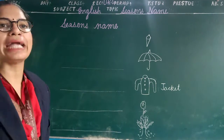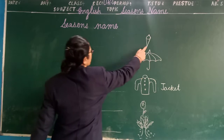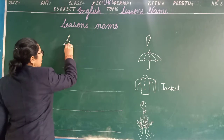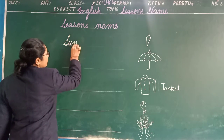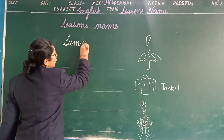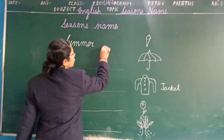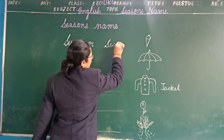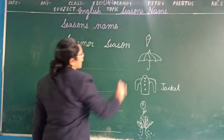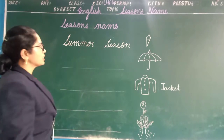You will learn and write in your notebook too. Ice cream khaate hain hum log, summer mein. So write the spelling of summer: S-U-M-M-E-R, summer. S-E-A-S-O-N, season.